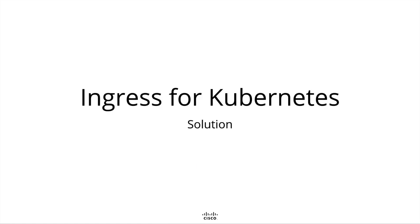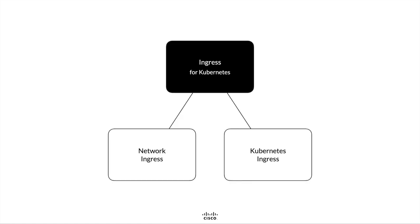How does Ingress for Kubernetes address this problem? To enable the external consumption of a set of Kubernetes HTTP services hosted on one cluster via one HTTP endpoint, Ingress for Kubernetes addresses two different concerns: Network Ingress as well as Kubernetes Ingress. Network Ingress addresses the question of how to admit traffic into the cluster. Kubernetes Ingress addresses the question of how to route traffic within the cluster.